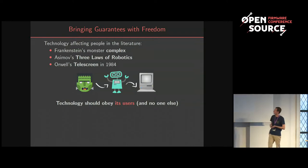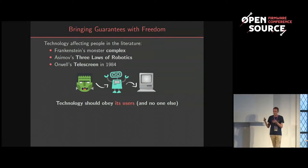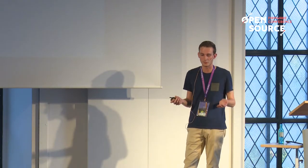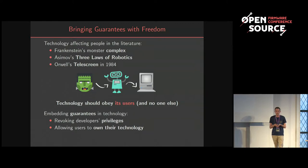This problem has been known in literature for a while. Nowadays it's clear that computers don't necessarily obey users — they obey the people who program them. This is why we need to embed guarantees in technology that allow revoking developers' exclusive privileges, so that all of society can control the technology if they want to. It doesn't mean everyone has to be a developer, but anyone who wants to become one should be allowed to. Users should be allowed to own their technology.